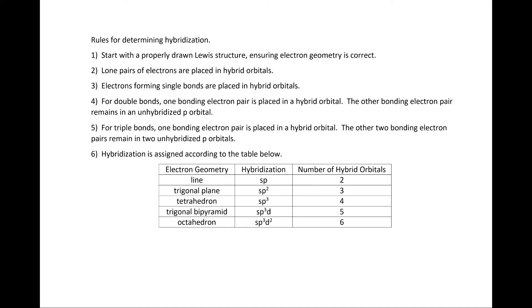When determining hybridization, start with a properly drawn Lewis structure ensuring the electron geometry is correct. Lone pairs of electrons are placed in hybrid orbitals, and electrons forming single bonds are placed in hybrid orbitals. There are no double or triple bonds, so we move to Rule 6. Hybridization is assigned according to the table below.